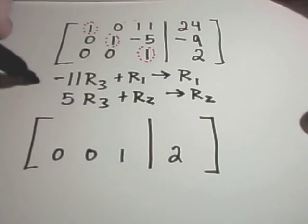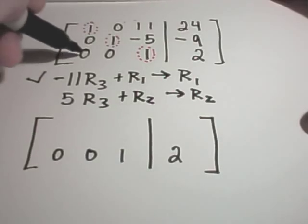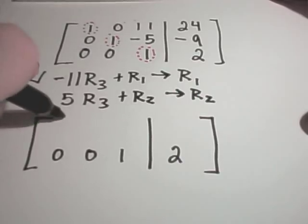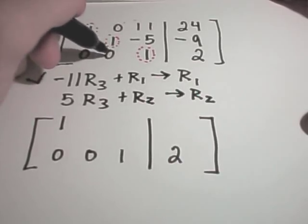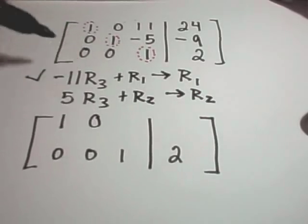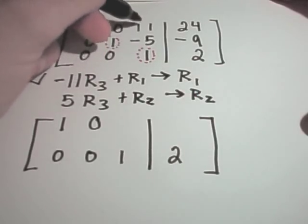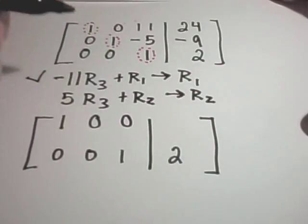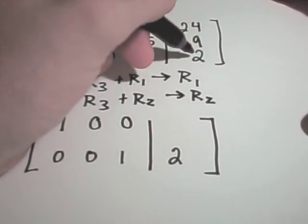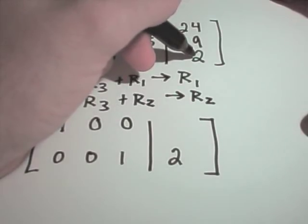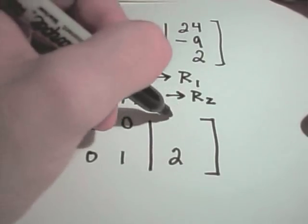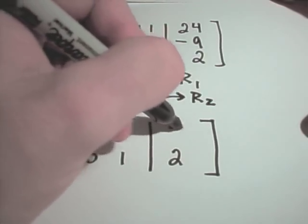So I'm going to do this first step. So if I take negative 11 times 0 and add it to 1, that'll just give me 1. Negative 11 times 0, add it to 0, that's still 0. I'll take negative 11 times 1, that's negative 11 plus 11, that's 0, that's the whole point. Negative 11 times 2 is negative 22. Negative 22 plus 24 is going to give me just plain old 2.